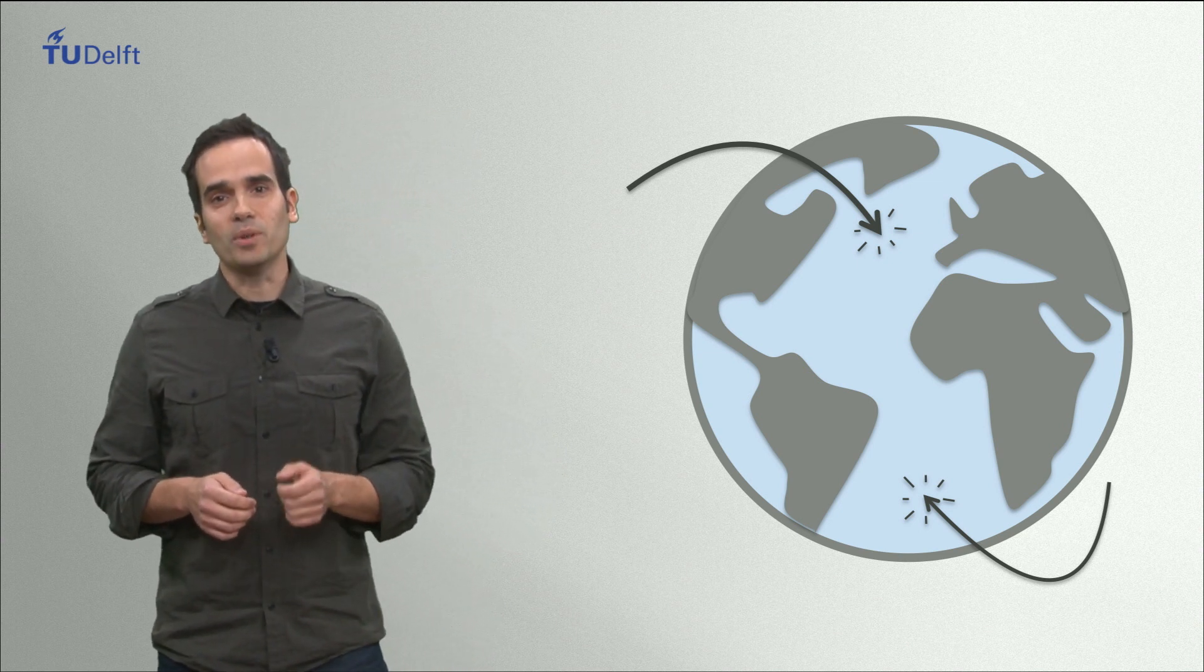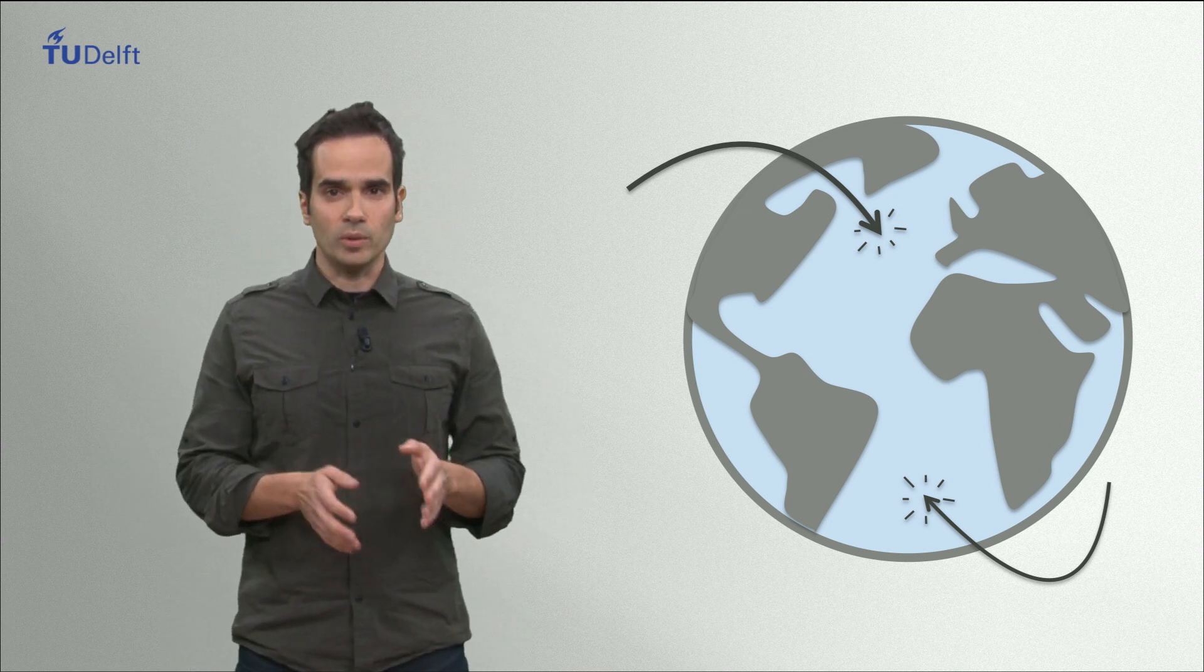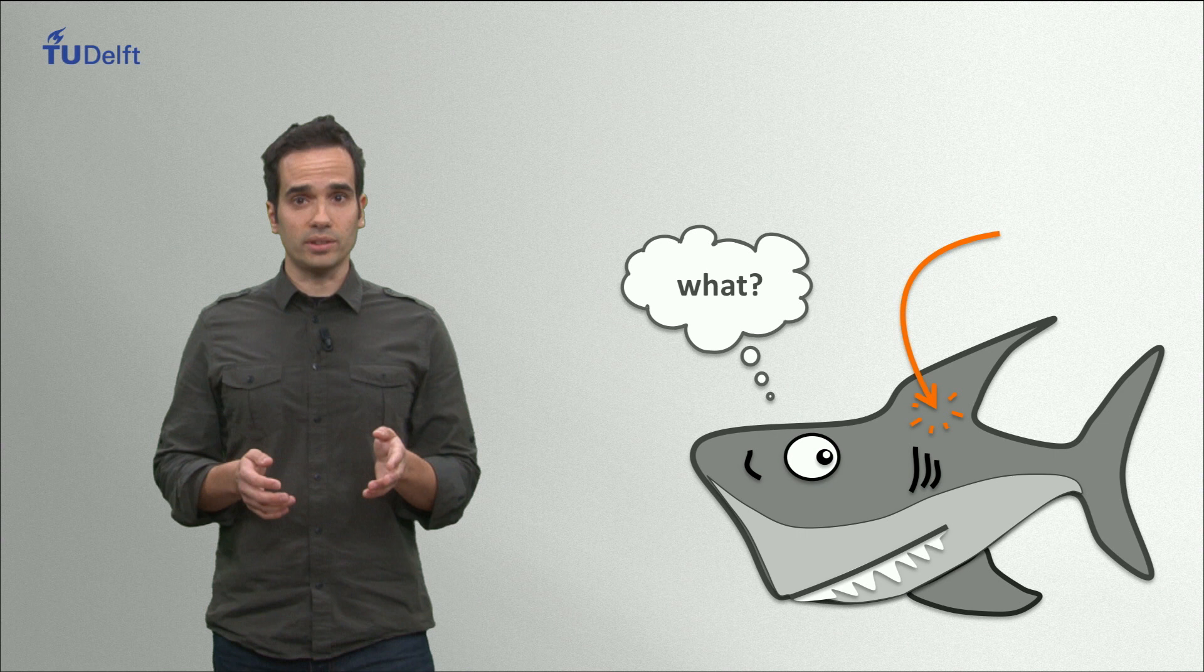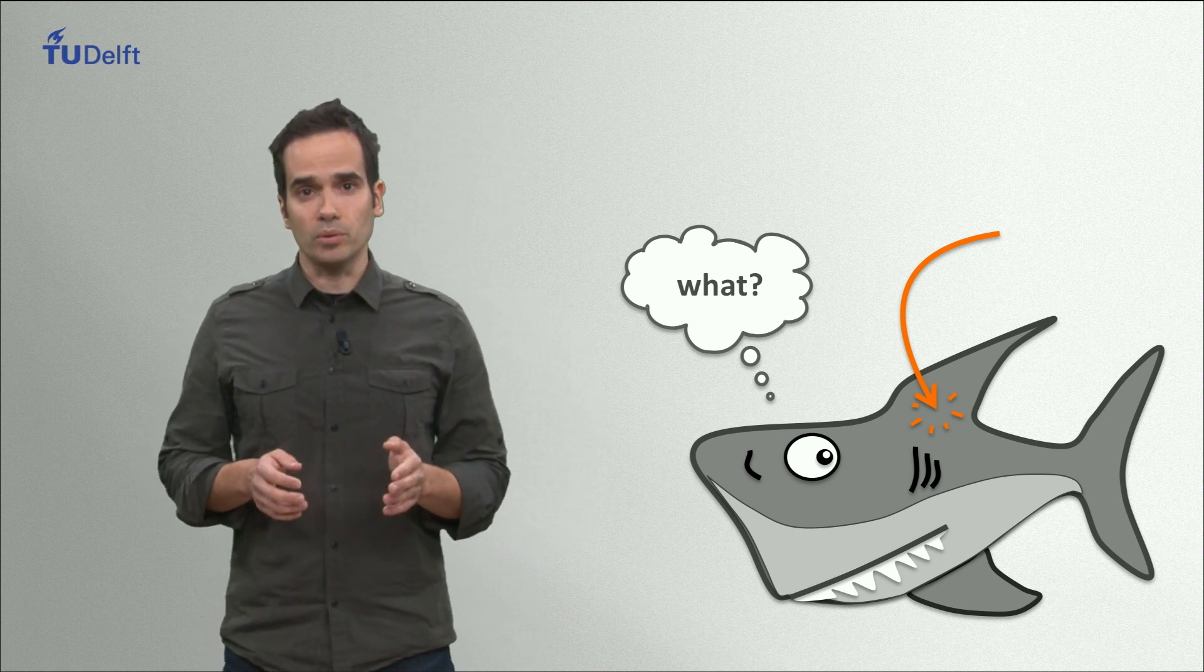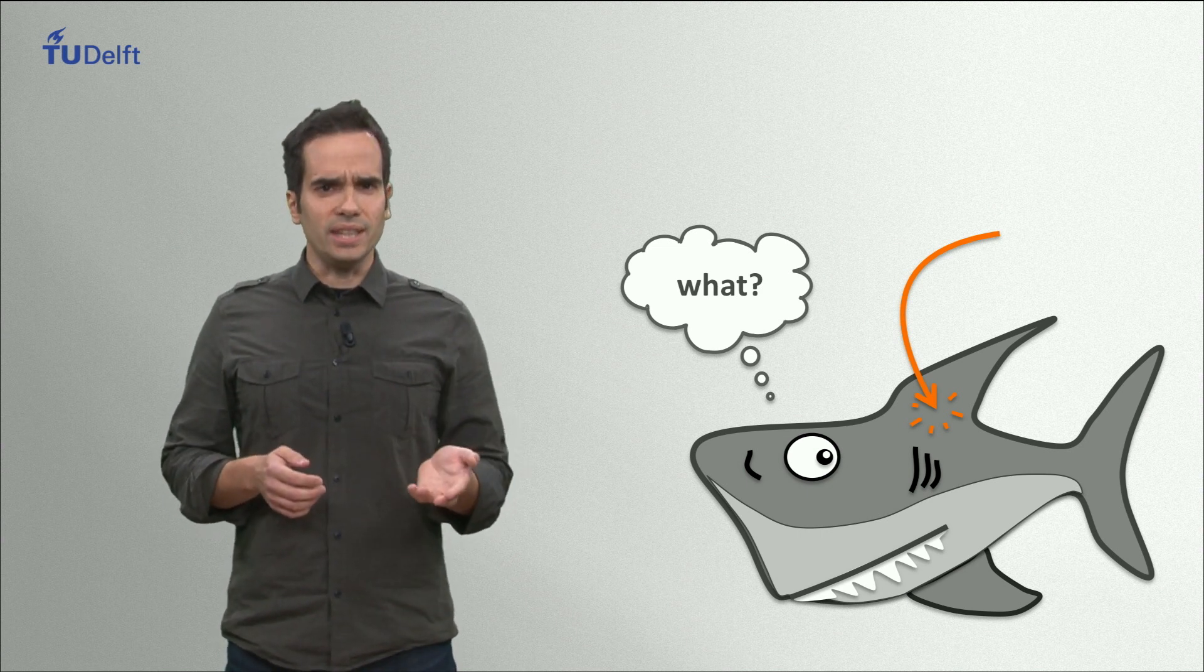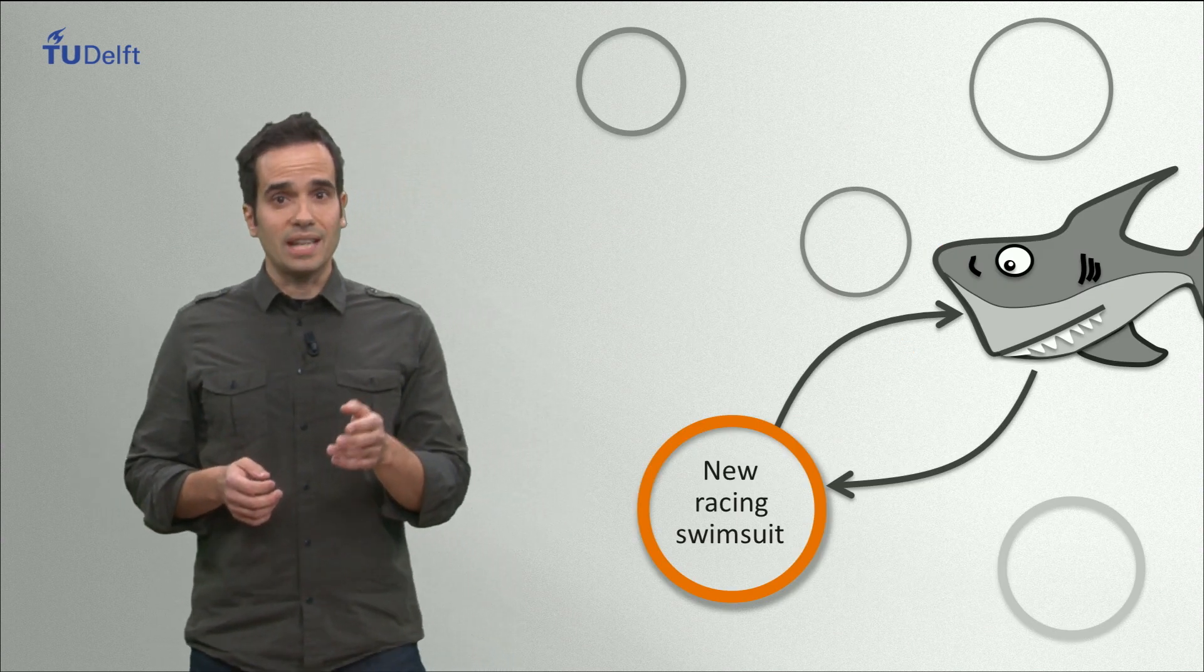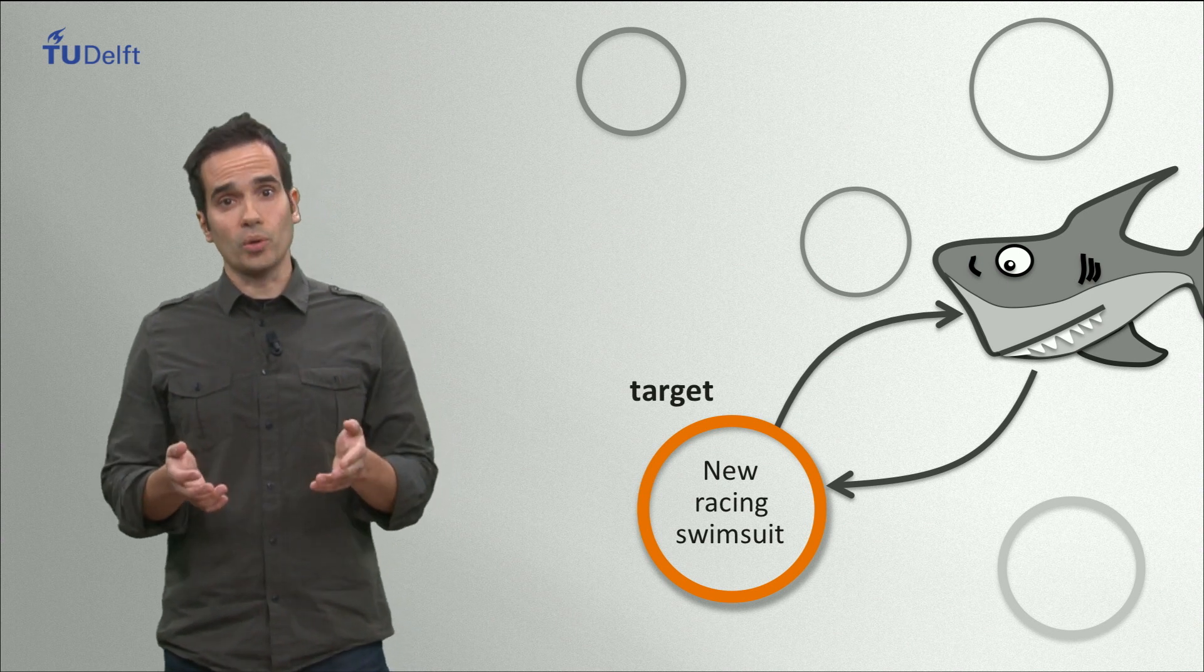This was exactly what some people thought a while ago when they studied the skin of fast swimming sharks and found out that the skin was not smooth but bumpy. And the result? Well, some of the most successful companies that produce swimsuits replicate this skin structure on the surface of swimsuits. So you see, the aim to develop a new and faster swimsuit relates to your target and the shark, and more specifically its skin, is your source.